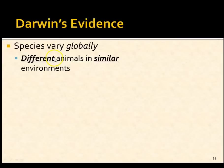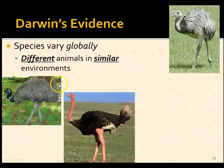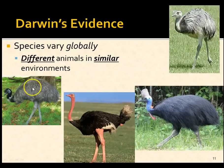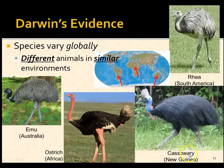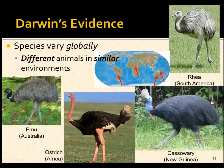Darwin also noticed that species varied globally. Four different flightless birds inhabit four very similar environments: the emu in Australia, the rhea in South America, the ostrich in Africa, and the cassowary in Papua New Guinea. These environments are relatively similar, yet they have different flightless birds — raising the question of why different animals would evolve in essentially the same kind of environment.